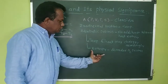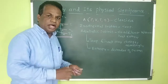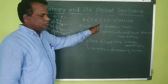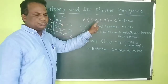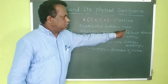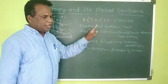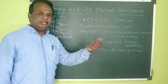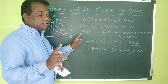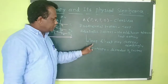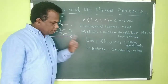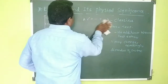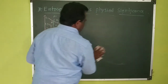Entropy is nothing but the disorder of the system. This disorder of the system remains constant in an adiabatic process. So now we can discuss the concept of entropy and how it is defined. In isothermal processes temperature remains constant; in adiabatic processes no heat is added or removed, so neither heat nor temperature remains constant — the quantity that remains constant is called entropy.